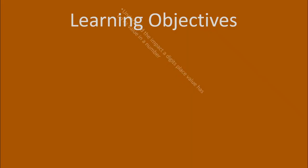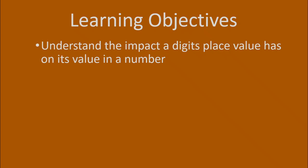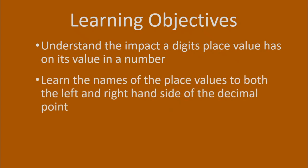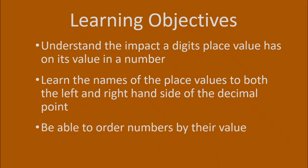First of all, what we're going to be learning in this lesson is to understand the impact of place value on the value of any digit in that place. We are also going to have a look at the names of different place values, both to the left-hand side and the right-hand side of the decimal point. And finally, we're going to be able to order our numbers by their value, so from biggest to smallest or from smallest to biggest.